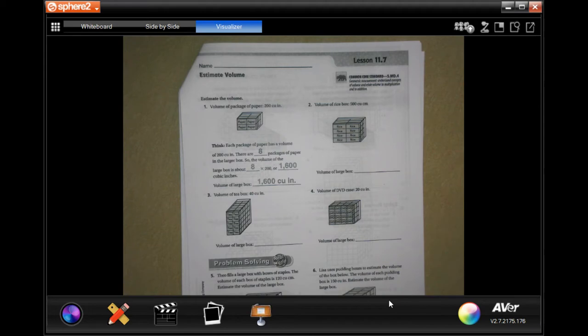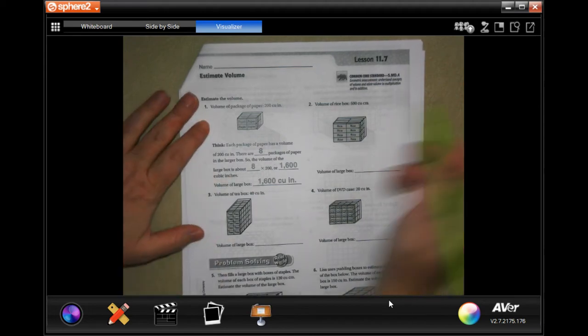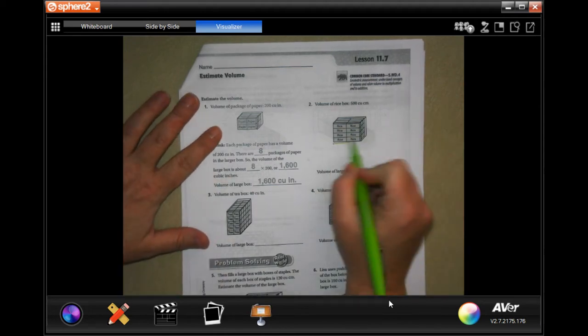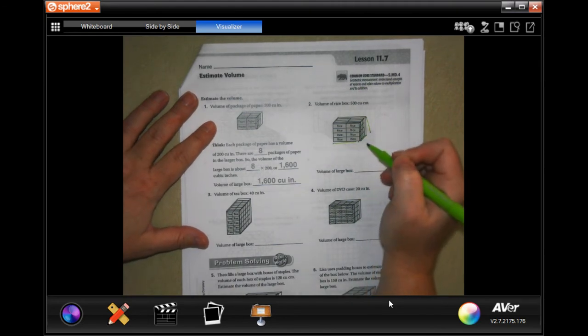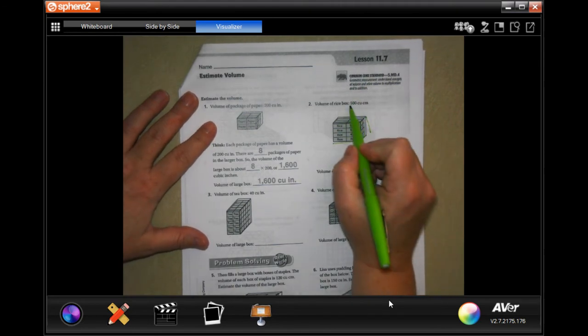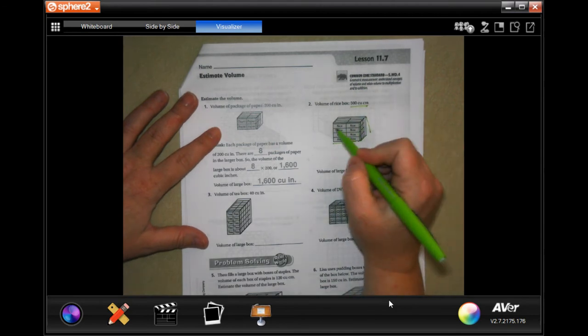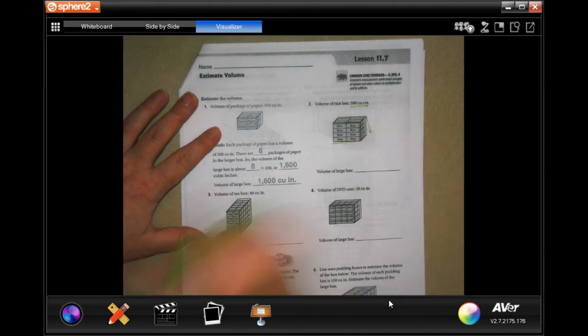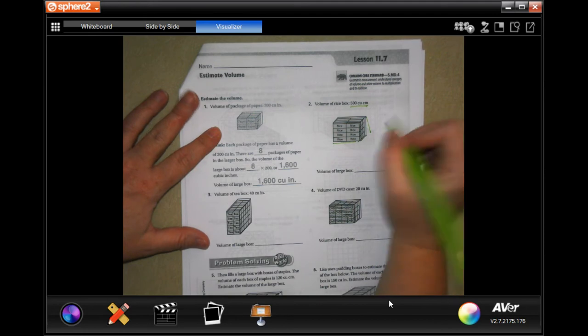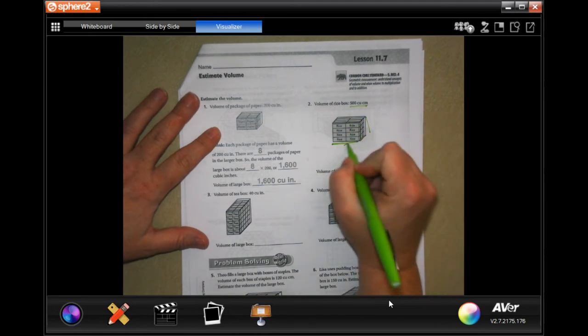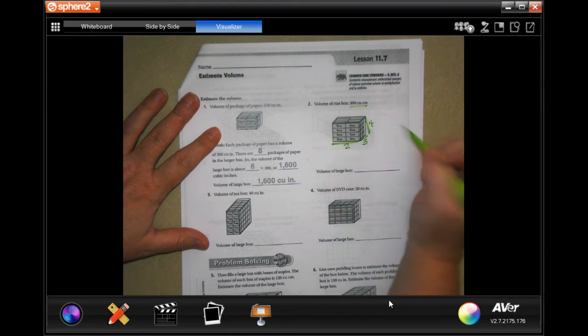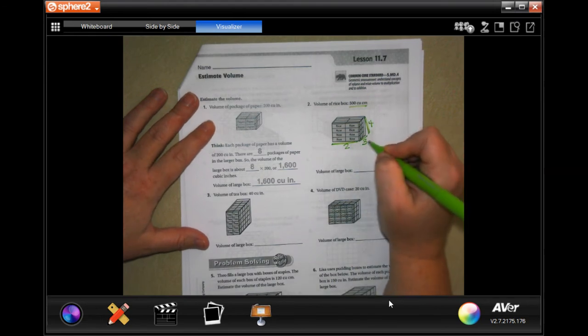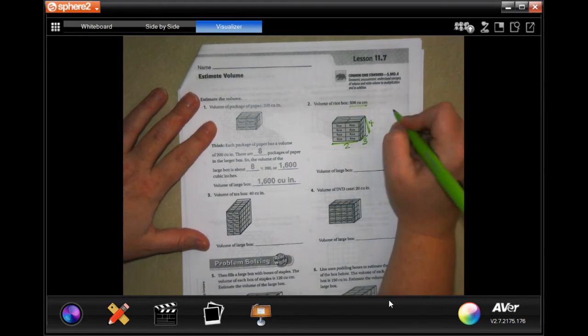We're going to go ahead and get started with number two. We're still finding the volume of the rectangles that are here, but then we need to multiply it. Let's just go ahead and do it. So we're going to do two times three times four. Two times three is six, six times four is 24.